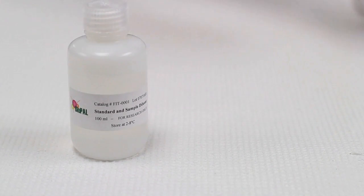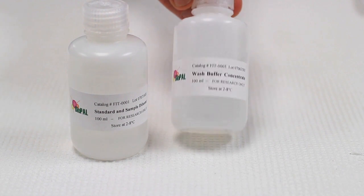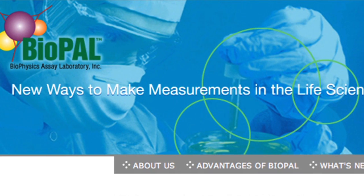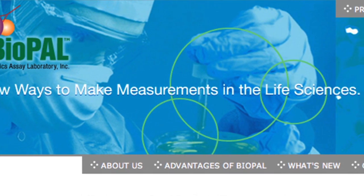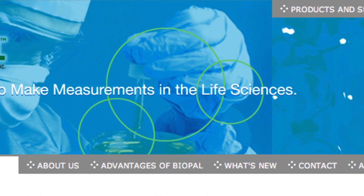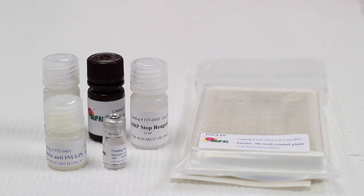Two additional reagents that are needed, but not provided in the kit, are standard and sample diluent and wash buffer. However, the recipe to make these two reagents is provided within the kit manual, which will allow you to prepare them in-house. These can also be ordered separately as ready-to-use reagents from Biopal. All components should be refrigerated until you run the assay, whereby all reagents should then be brought to room temperature before use.